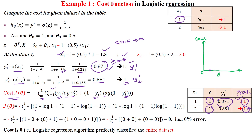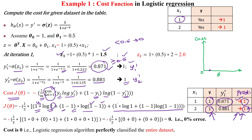Substituting the values — y1 dash and y2 dash — for sample number 1: the actual output is 1, log of the predicted value is 1 for the first sample, then 1 minus the actual value times log of 1 minus the predicted value for the first sample. For sample number 2: the actual output y is 1, predicted value y dash is also 1, giving log of y dash, then 1 minus y2 times log of 1 minus y2 dash.